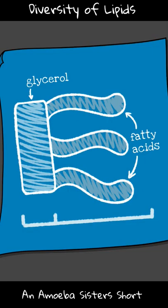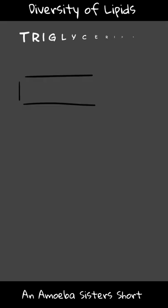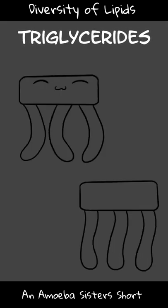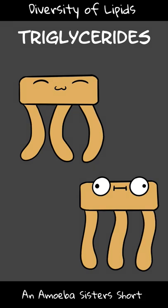As a fat, lipids have two types of building blocks: a glycerol and fatty acids. A triglyceride is a fat. Whether fats are saturated or unsaturated depends on the fatty acids. Unsaturated fatty acids generally have one or more double bonds, making them less saturated with hydrogens.